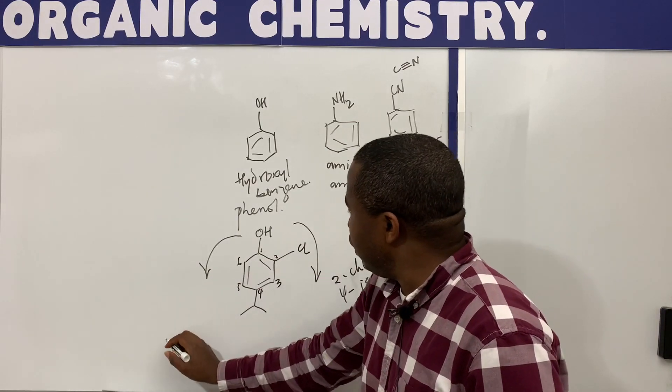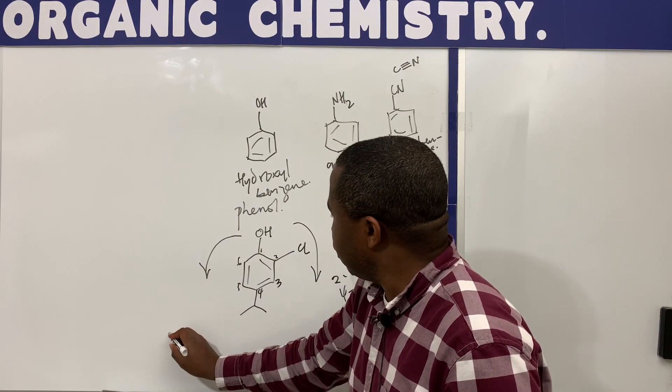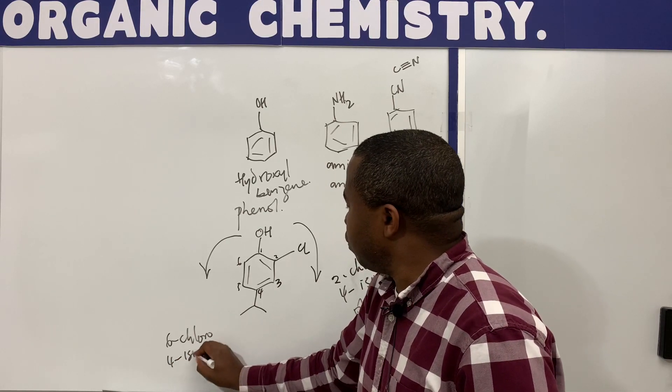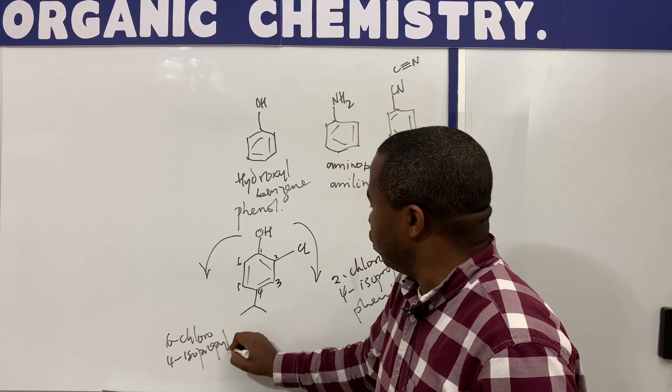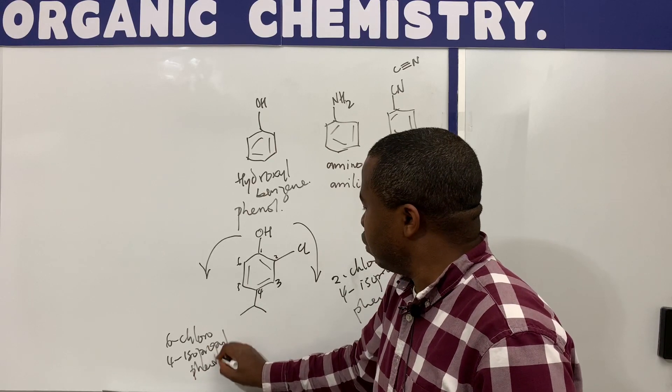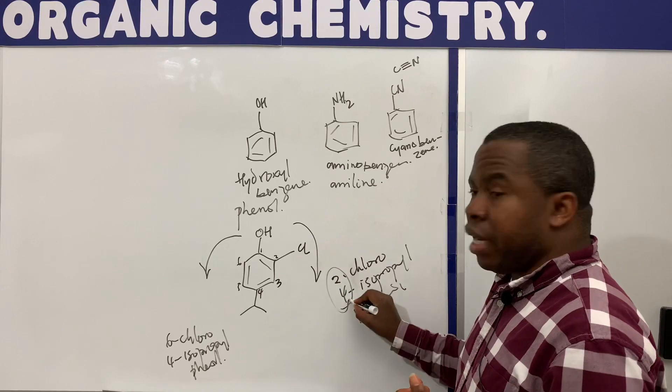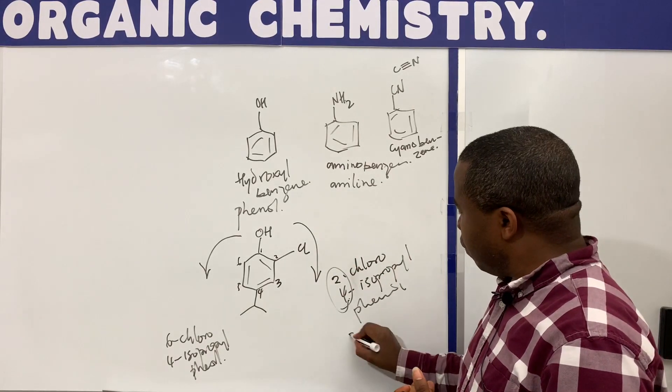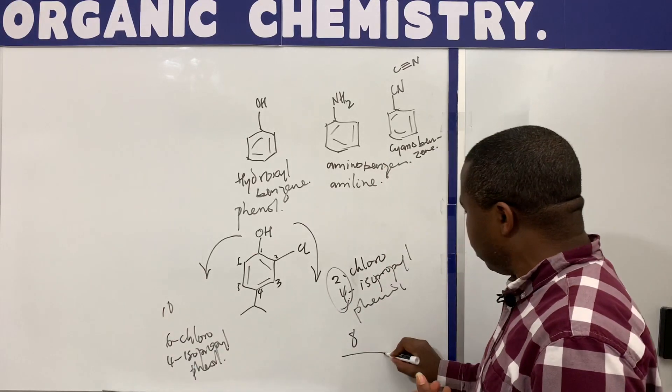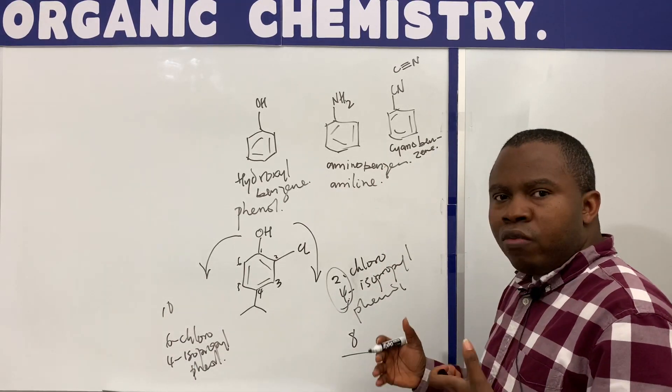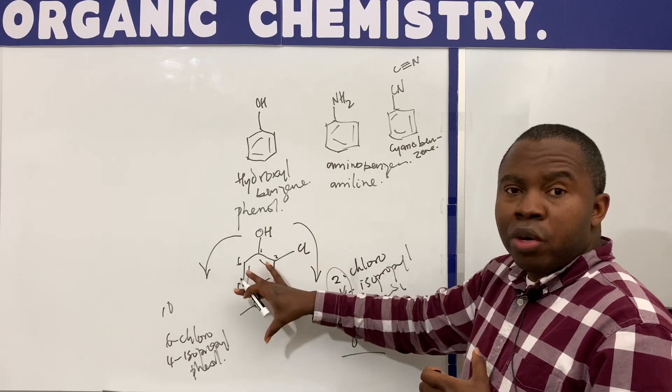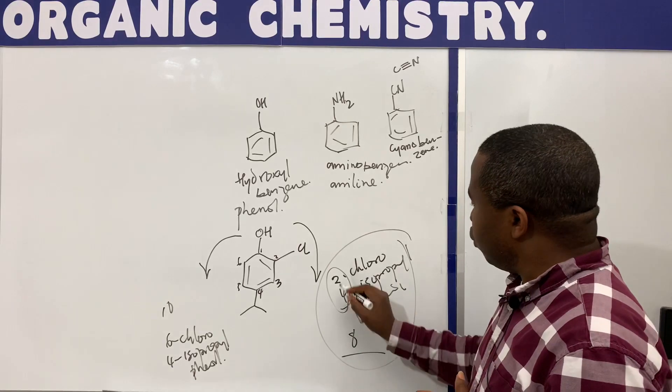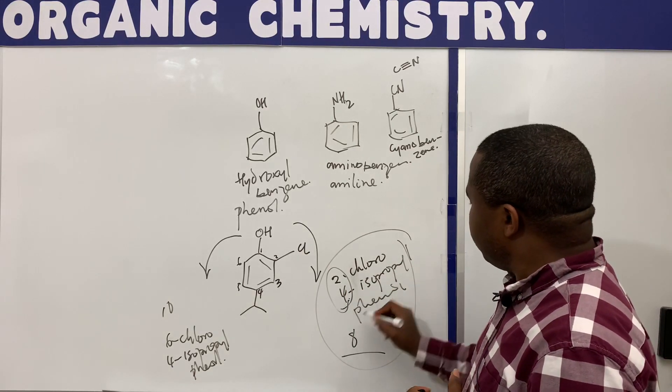But if you go this way, it's going to leave us with six-chloro, four-isopropyl-phenol. So if you add this together, the locants, the location of the substituents, here it's going to be eight, and here it's going to be ten. So this leaves us with the least number of locants on this molecule, and that's why we're going to go with this nomenclature. So it's going to be two-chloro-four-isopropyl-phenol.